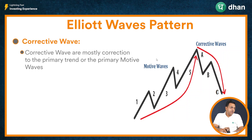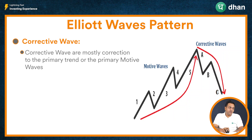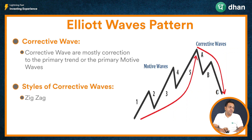As you can see on my screen, corrective waves are mostly corrections to the primary trend or the primary motive waves — that is wave number 1, wave number 3, and wave number 5 — which are in the direction of the primary trend. There can be various styles of corrective waves which can be zigzag, flat, or triangles, which is what we are going to understand in this video.